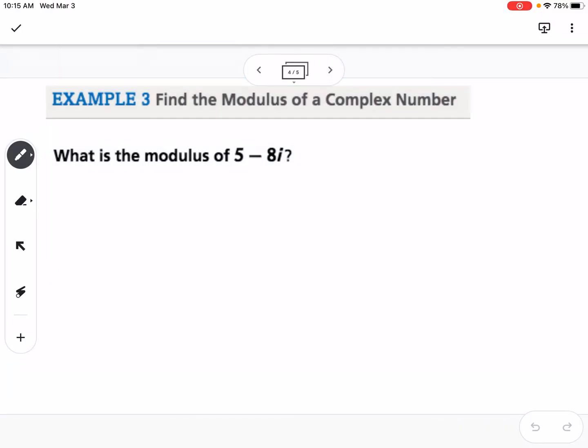Okay, the next part is the modulus of a complex number. So the modulus is the distance from the origin. So if we have 5 minus 8i, I'm just going to sketch roughly here. So 5 minus 8i might be right here. So we're finding that distance right there, and we represent it with a z.